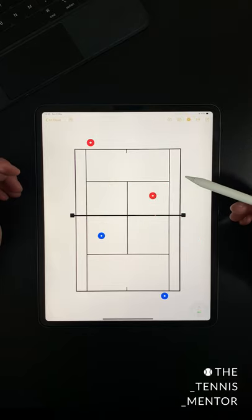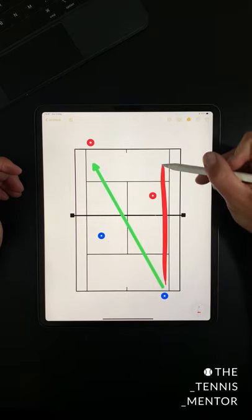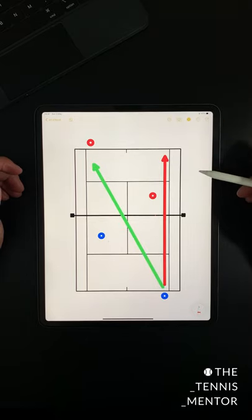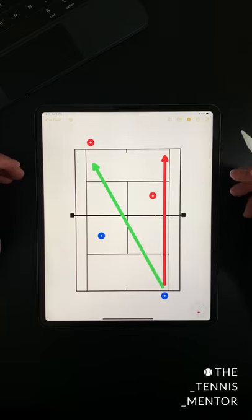Generally speaking, we know that going cross court is the high percentage shot in doubles, and going down the line can be very risky. However, there are some occasions where hitting down the line is the best option, and I'm going to show you three of them.